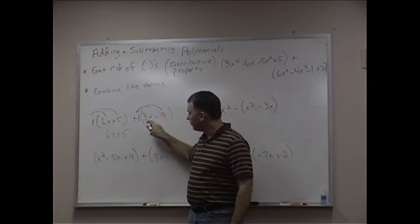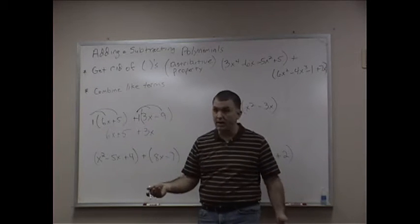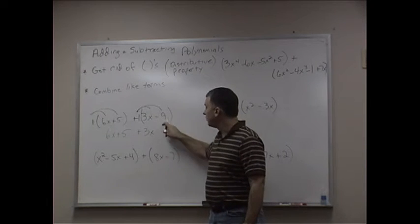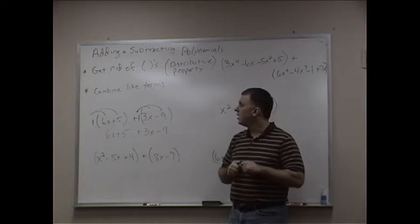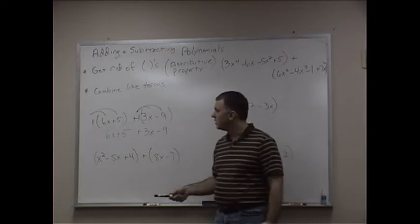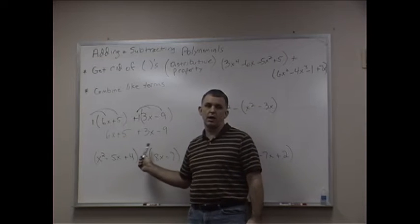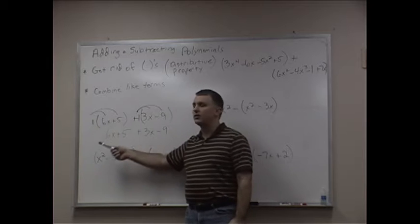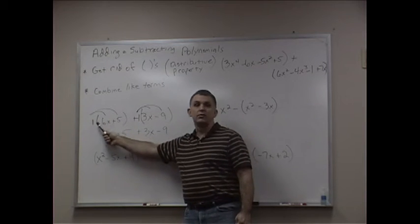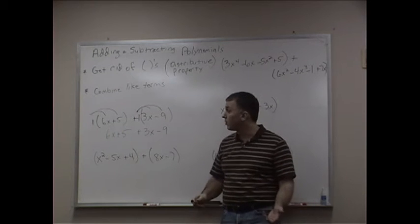And when I distribute this 1 right here, it gives me a 1 times 3x. It's 3x. Now, I'm writing plus 3x because it's positive. And 1 times negative 9 gives me minus 9. Now, if we examine this here for a moment, you'll start to realize right away nothing changed. In essence, when it's a positive, when there's just nothing out there, it's like a positive 1, you just get to drop the parentheses.